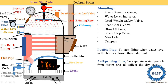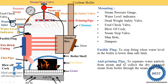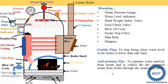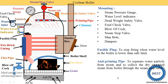The anti-priming pipe is used to separate water particles from the steam and collect dry saturated steam. The wet particles or water particles present in the steam are removed by the anti-priming pipe, and the dry saturated steam is supplied to the steam stop valve.